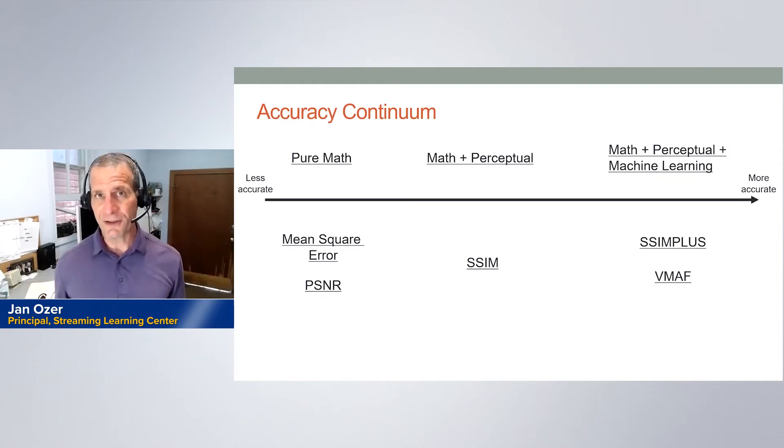That's kind of the mean square error in PSNR. SSIM was the first one to try and gauge how much humans actually cared about those differences. Some differences you notice more, some differences you notice less. That's why most people who use metrics consider SSIM superior to PSNR.